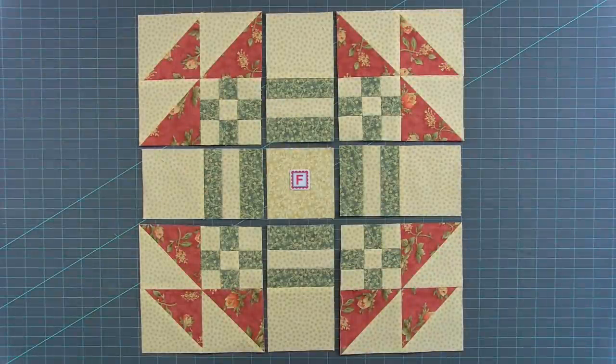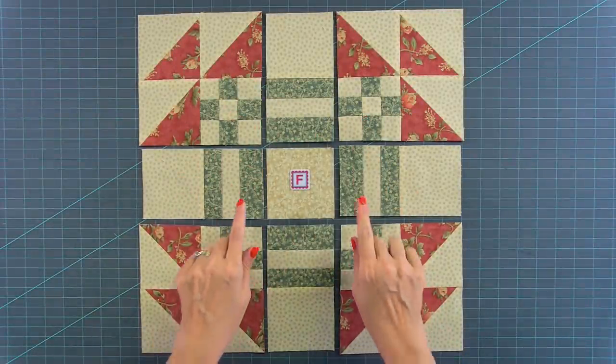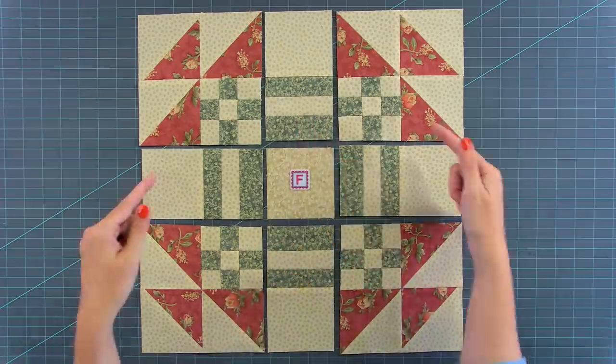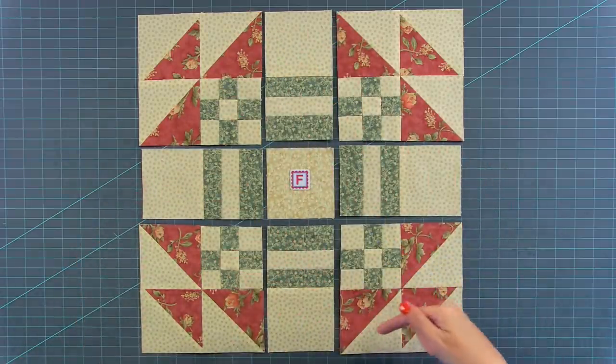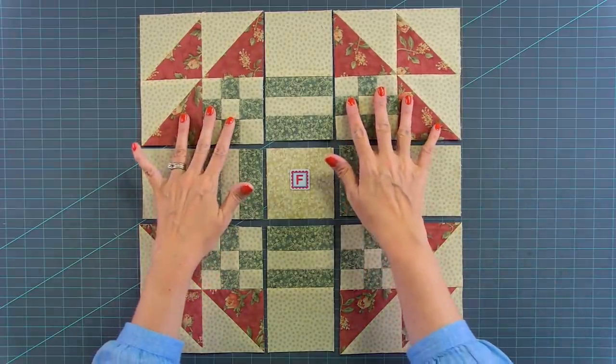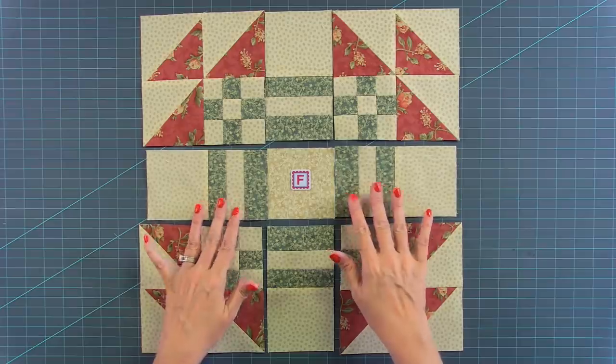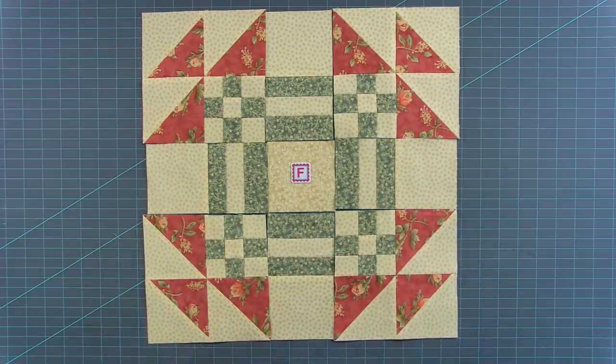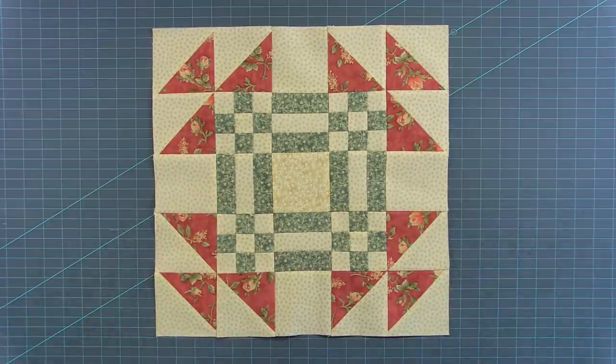The very last step is to lay out your block. And just make sure your rail units are on the inside. And that you haven't misplaced the direction of your half square triangles. You're going to pin these all together. Stitch with a quarter inch seam. Once those are done, you'll add your last two seams. And ta-da! Your block is done.